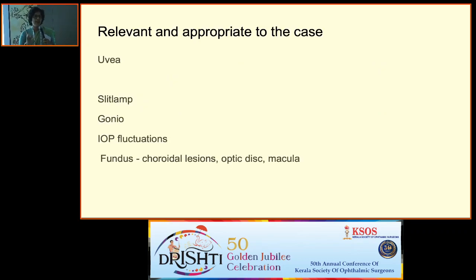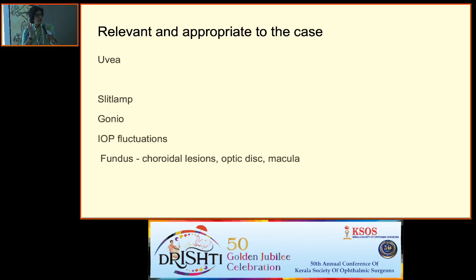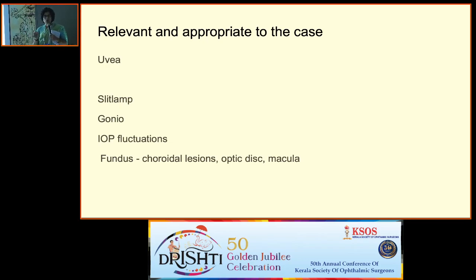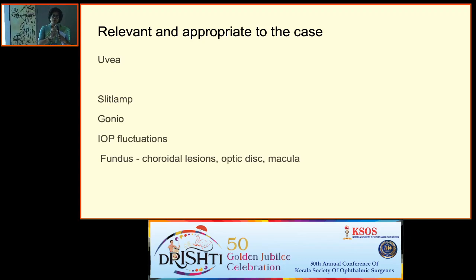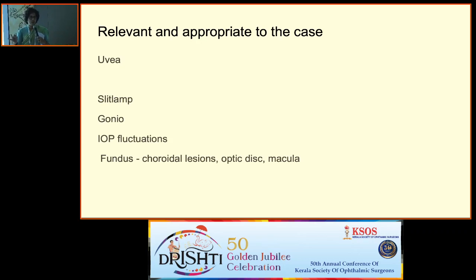First, it should be relevant and appropriate to the case. For example, in a uveitis case, you should definitely mention positive and negative findings on slit lamp. Gonioscopy is a must — do not forget. IOP fluctuation and pupil are very important in all cases. Also, corneal sensation — don't forget. Finally, in fundus, comment on the disc, macula, choroid, and pars plana.